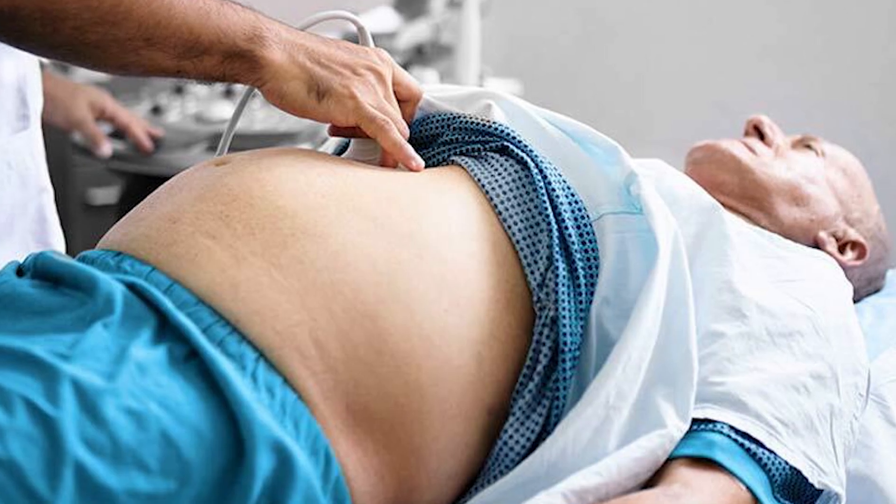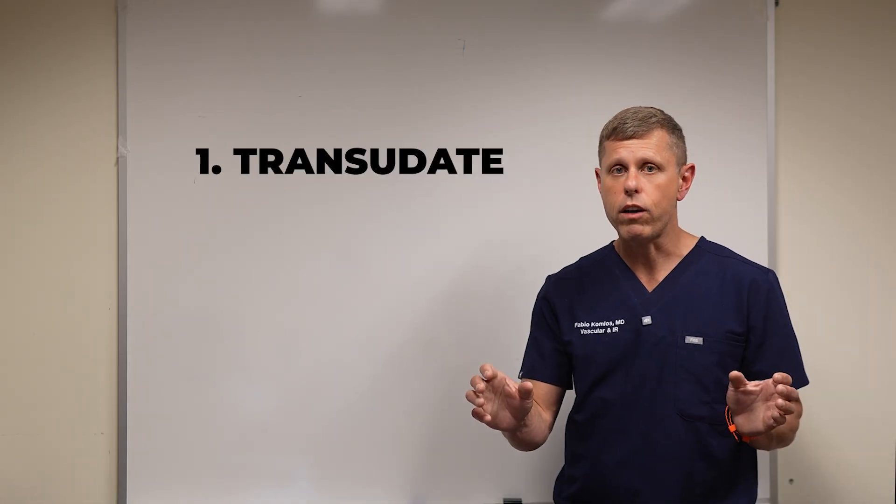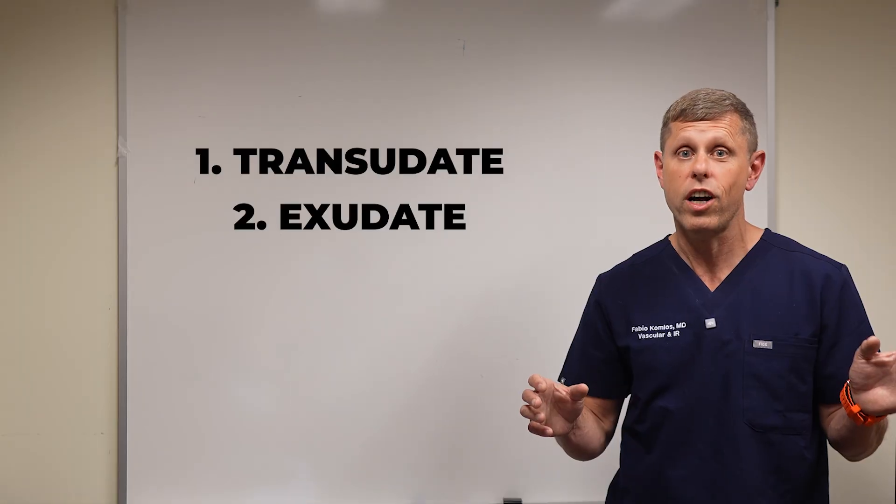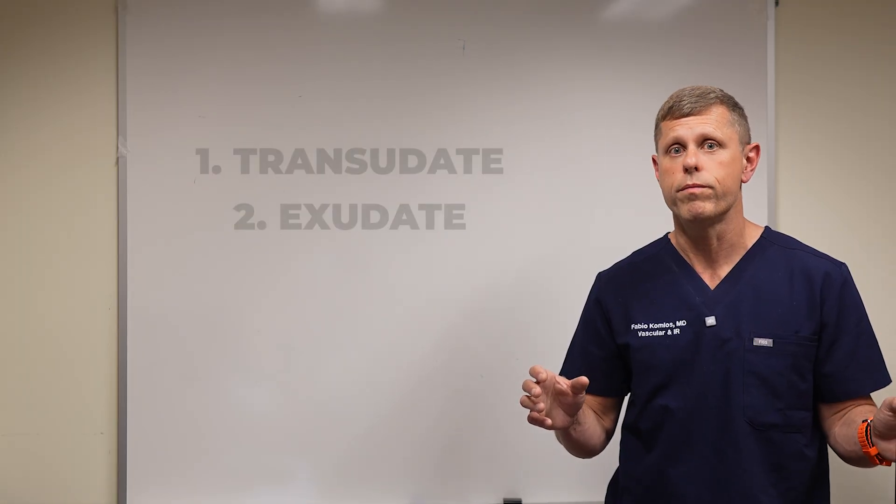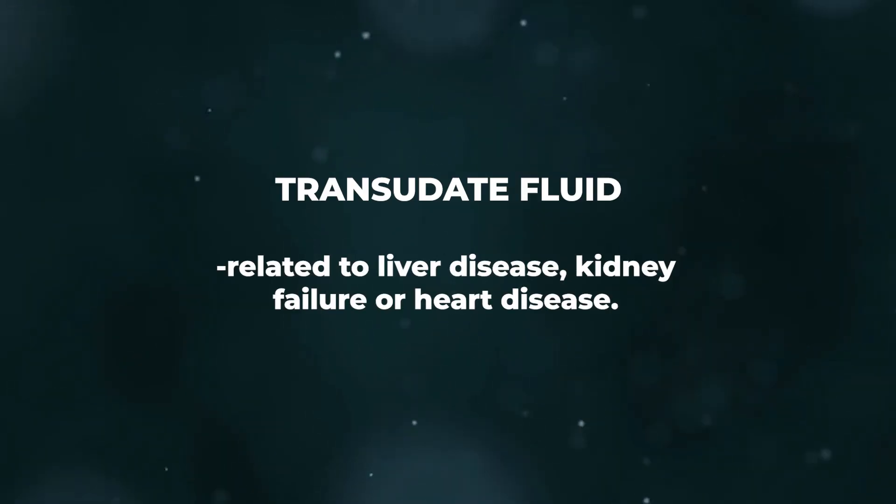When we see a patient that has accumulation of fluid in the abdomen or ascites and we're trying to figure out why, we try to divide the patients in two different categories. One is a transudate, which is essentially a very thin fluid that doesn't have a lot of cells or protein in it. It's basically water. And the second category is called an exudate, which means that fluid has protein and cells in it. It's not as thin as water. This is important because it helps us to differentiate the causes. If the fluid is a transudate or the thin fluid, it's usually related to either liver disease or kidney failure or heart disease.